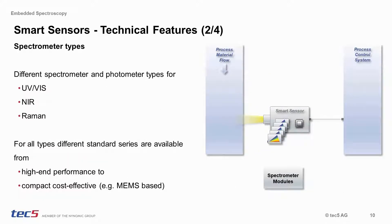Particle spectroscopy is based on the interaction between light and matter. The type of production process and the chemical and physical composition of the sample under investigation are essential, as they have an impact on the selection of the proper wavelength range and technology to be used. Our platform offers a multitude of spectral ranges from the UV-Vis to the NIR, but also for Raman spectroscopy. Different grades of standard detector types allow configuring high-end performance as well as compact and cost-effective smart sensors based on, for example, MEMS technology.